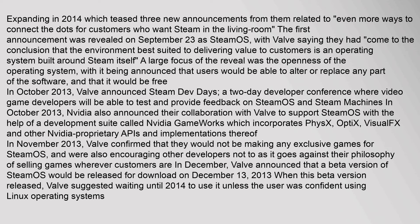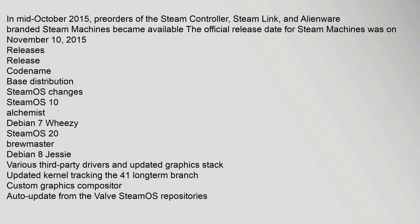In mid-October 2015, pre-orders of the Steam Controller, Steam Link, and Alienware-branded Steam Machines became available. The official release date for Steam Machines was November 10, 2015. SteamOS releases include SteamOS 1.0 codenamed Alchemist based on Debian 7 Wheezy, and SteamOS 2.0 codenamed Brewmaster based on Debian 8 Jessie, featuring various third-party drivers, updated graphics stack, updated kernel tracking the 4.1 long-term branch, custom graphics compositor, and auto-update from the Valve SteamOS repositories.